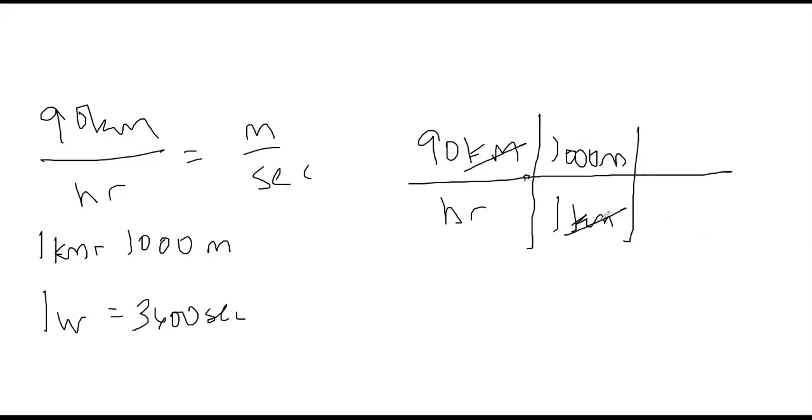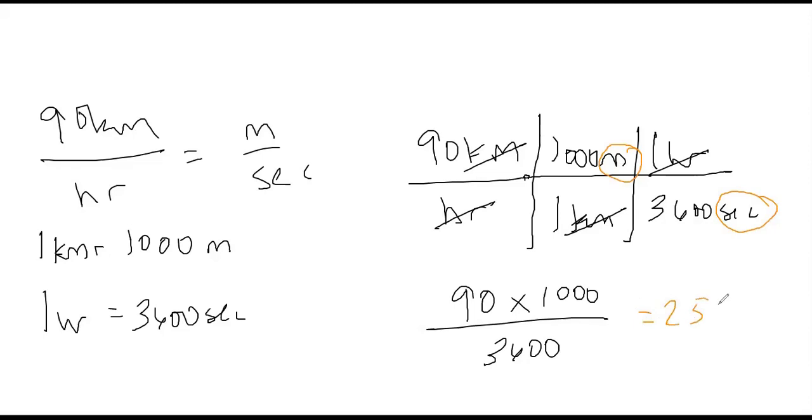And then we got to get rid of the hours too, so we got to put our hours up top here and our seconds on the bottom. Hours cancel, so this gives us 90 times a thousand over 3600, and we're left with meters per second. 25 meters per second.